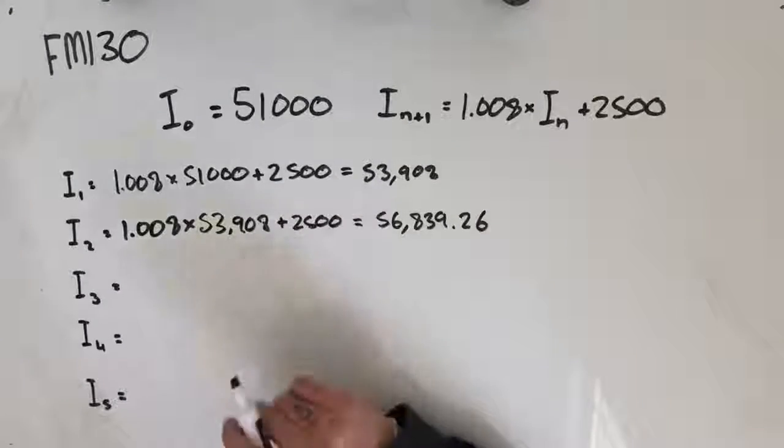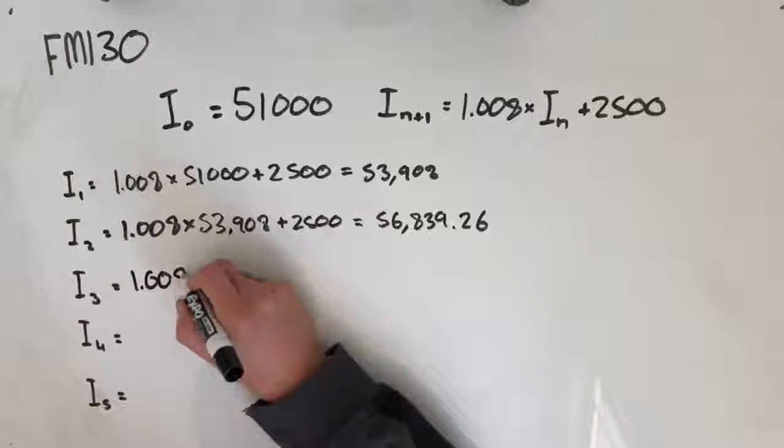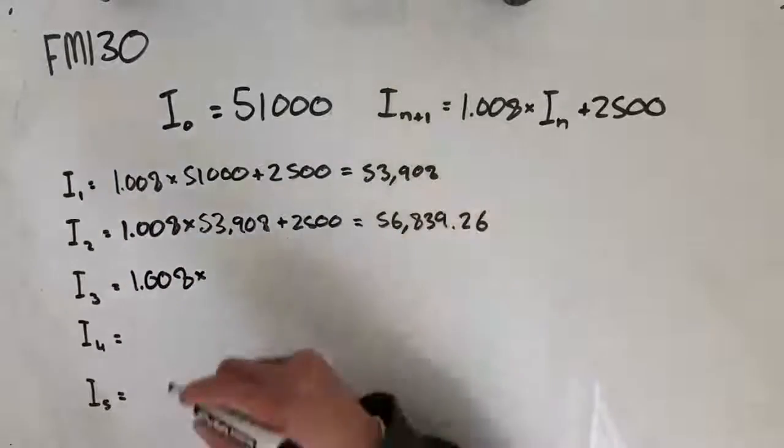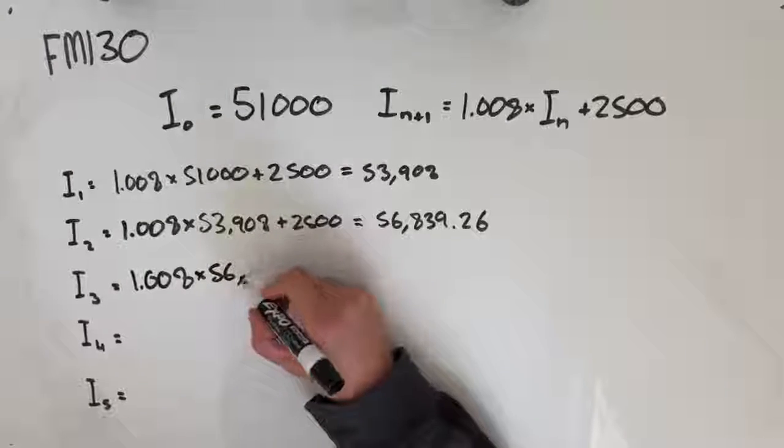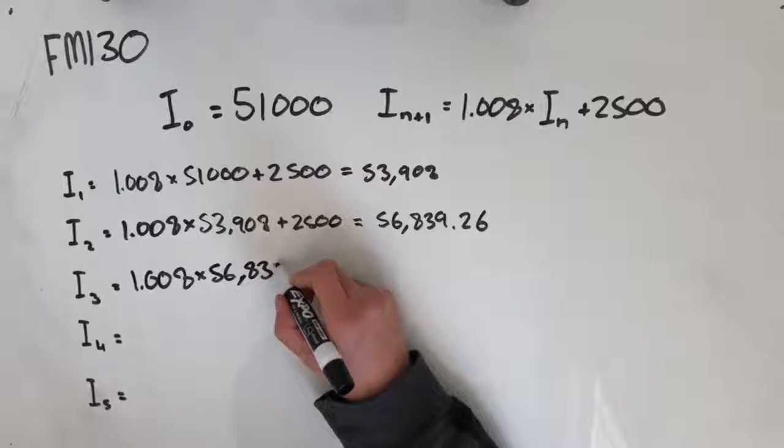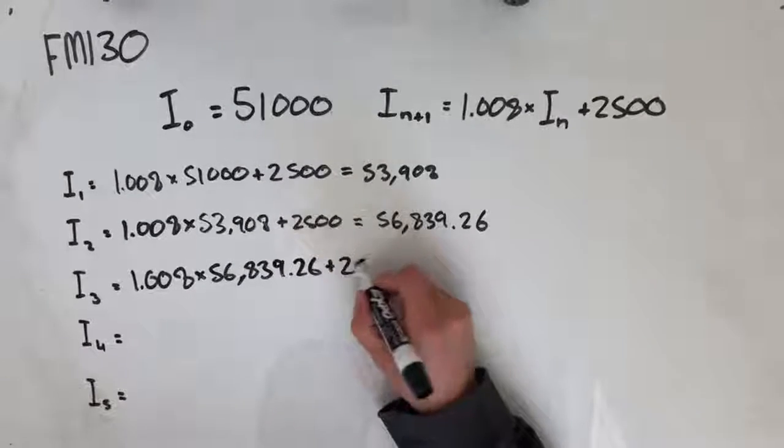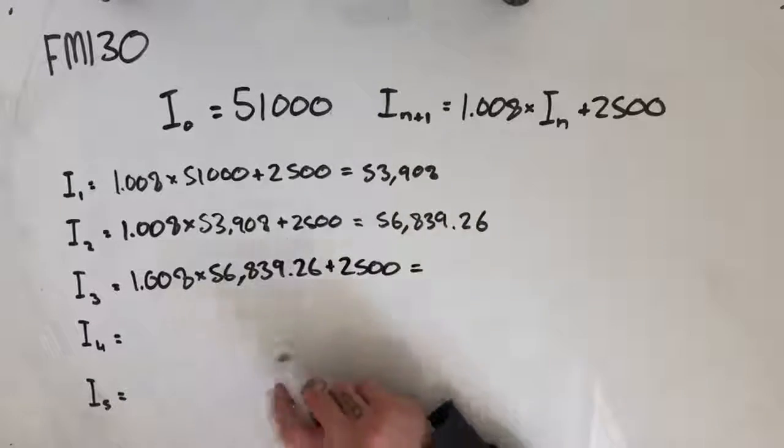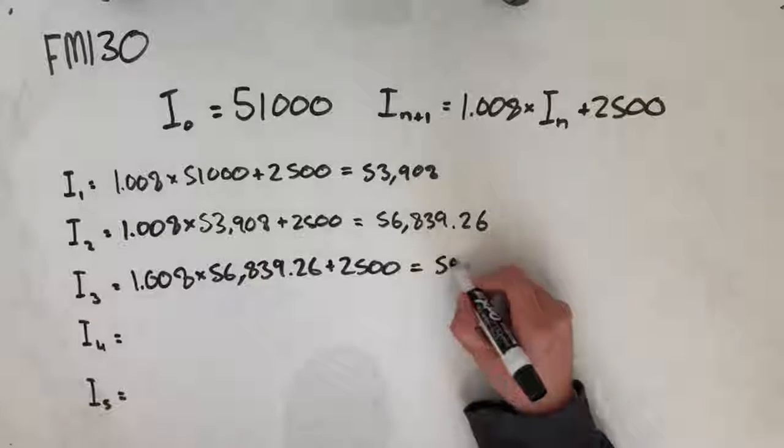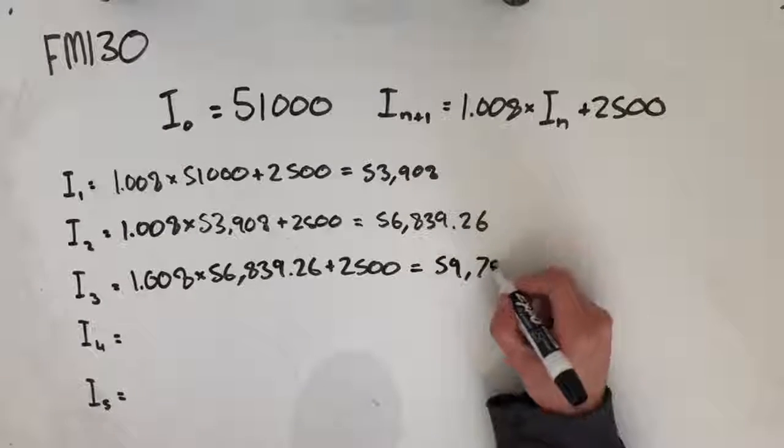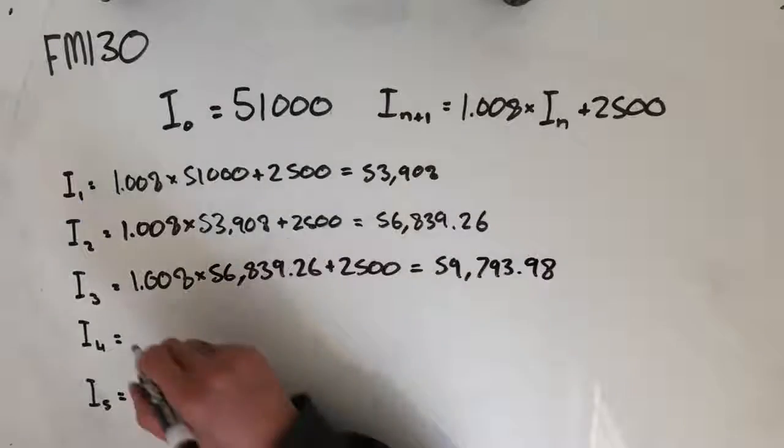I just want to save space on this whiteboard. So, 1.008 times whatever that number was you had before—I'm just going to drop it in as the two decimal version—plus 2,500. And that full amount in there should end up giving you something along the lines of 59,793.98.